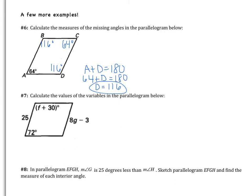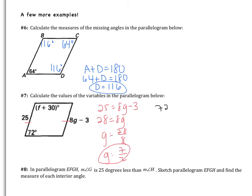Example seven: calculate the values of the variables. Opposite sides are congruent, so 25 equals 8G minus 3. Adding 3 gives 28 equals 8G, so G equals 28 divided by 8, which simplifies to 7/2. For the angles, the two given angles are consecutive, so they're supplementary: 72 plus (F plus 30) equals 180. Combining like terms, 102 plus F equals 180, so F equals 78.